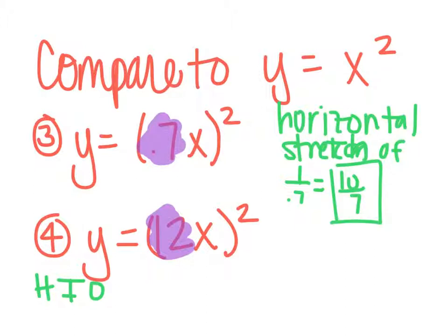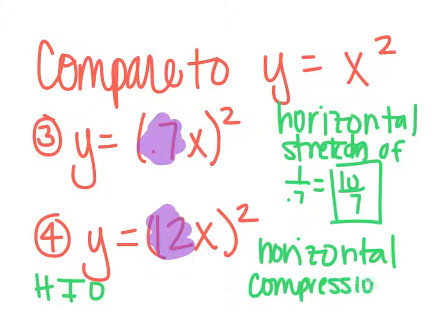And then if I have number 4, it says y equals 12x squared, and 12x is in parentheses. So my 12 here is bigger than 1, so that tells me that this is going to be a horizontal, remember it's the opposite of what we think it should be. So instead of a stretch, it's going to be a compression, because the number is getting bigger, so I'm going to be compressing the graph horizontally.